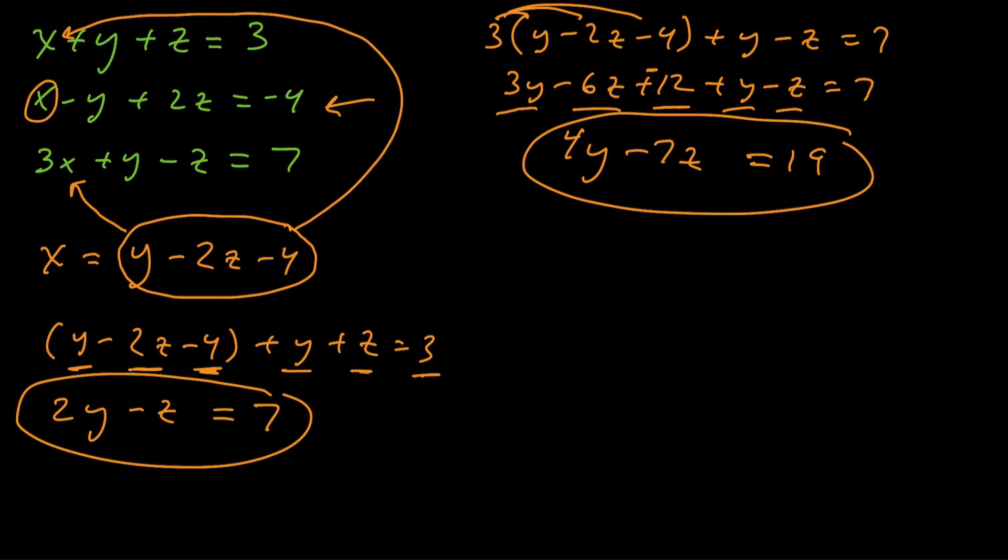So now at this point, you can see we've got two equations that have two variables. And we want to get this down into one equation with one variable. So what we're going to do is we're going to do that substitution method again. Okay, but this time, what I'm going to do is I'm going to solve for this z. So I'm going to get this z by itself. So what I'm going to do is I'm going to add the z to the right, and I'm going to subtract the 7 to the left. So that's going to be 2y minus 7. So that's what z is equal to.